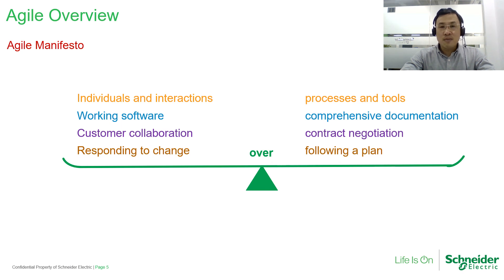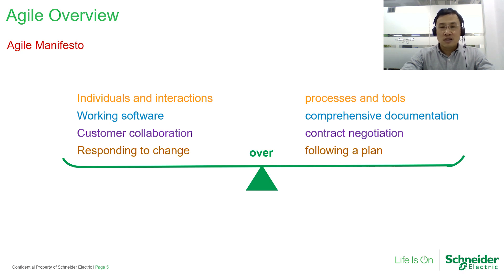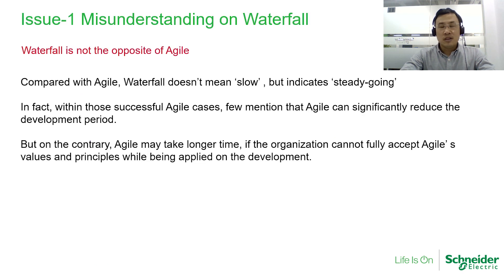Compared with the waterfall model or V-model, the Agile model requires the active involvement of the customer and requires efficient communication within the Agile team. Agile model provides flexibility for requirement changes.